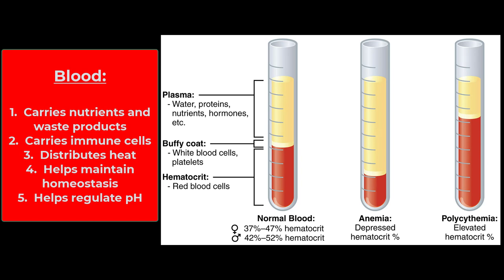Blood carries all the waste products back. So we would think about that as its key function. But there are lots of other functions too. It plays a role in defense, and that's because of your white blood cells. They play a big role in your immune function. We'll cover that a little bit here in this chapter and a lot more when we talk about the immune system in just a few chapters.